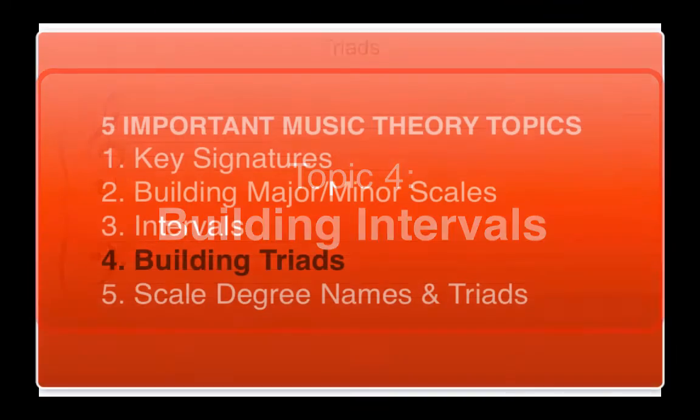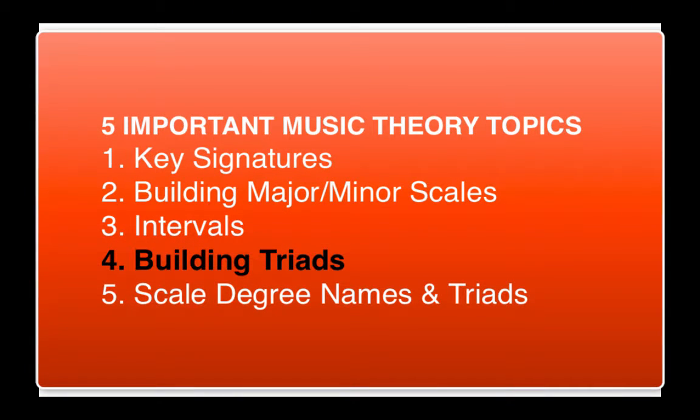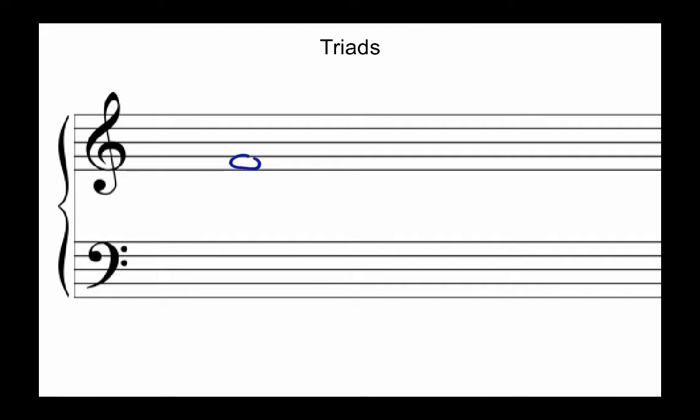In this video we'll discuss how to build a triad. Triads are chords that have three parts. The foundational part or the root of the chord is in the bottom. Then the middle note of the chord is called the third because it's three notes up. And then the top of the triad is called the fifth because it is five notes up from the root.